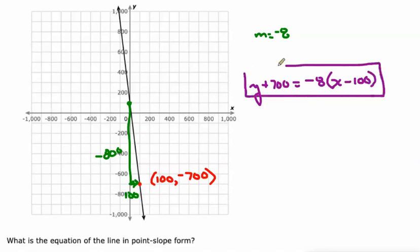So another way to look at it is it's always the opposite of these values. Instead of 100, we do negative 100. Instead of negative 700, we do positive 700.